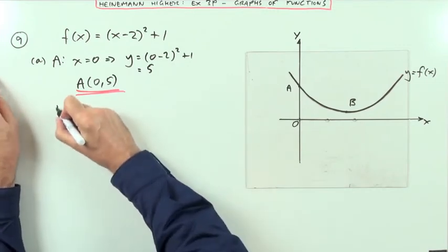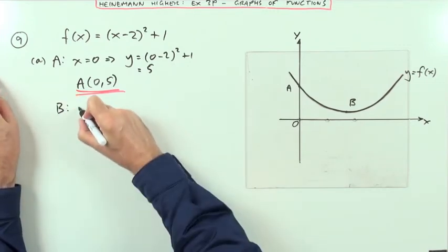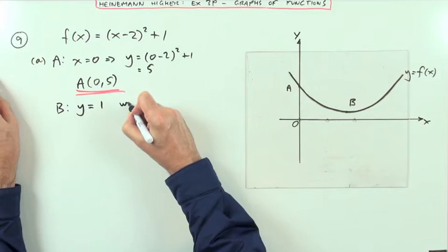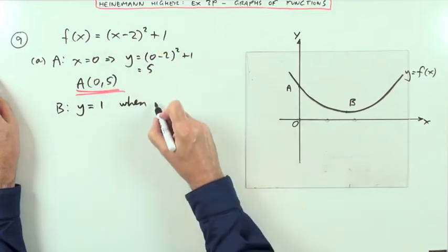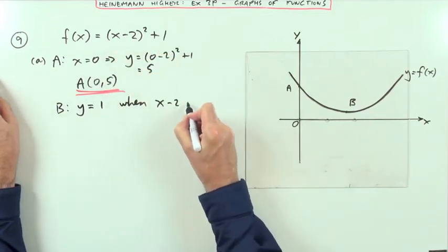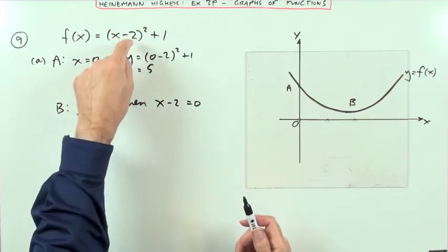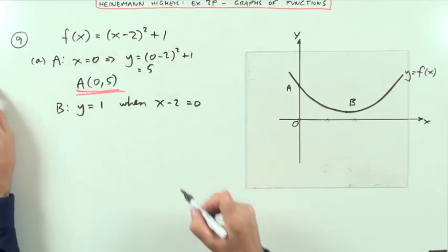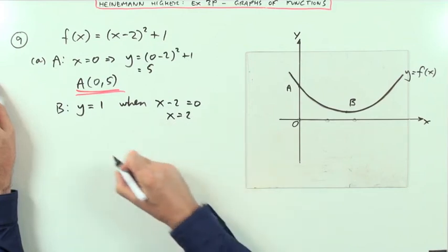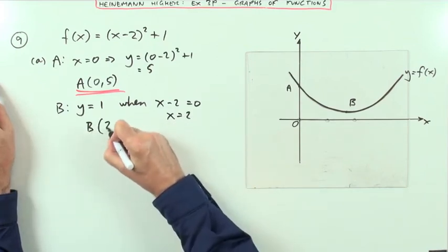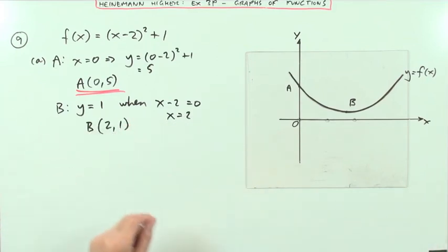that means the lowest value is 1. So I know straight away that at B, y equals 1 when that bracket equals 0, when x minus 2 is 0. If it's any other number, then it'll be something to add on to one and make it bigger. In other words, when x equals 2. So B is the point (2, 1).